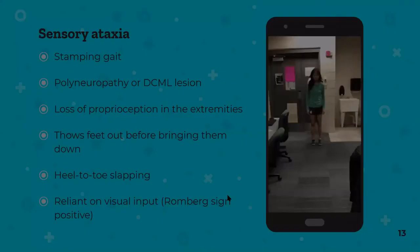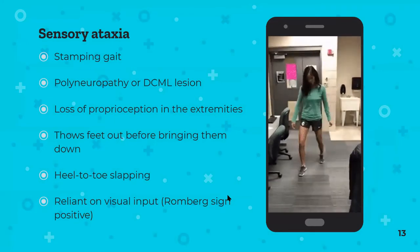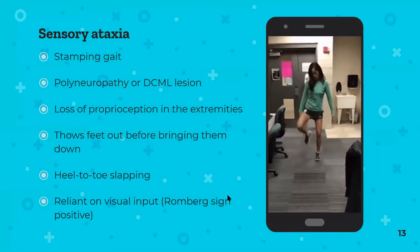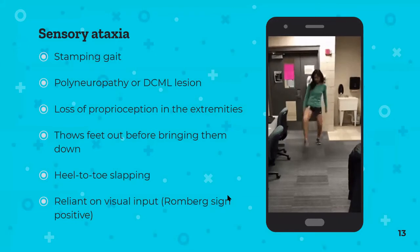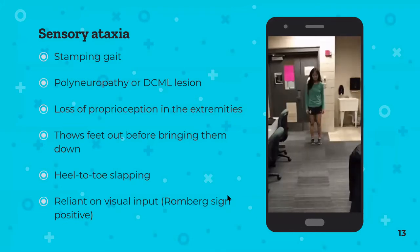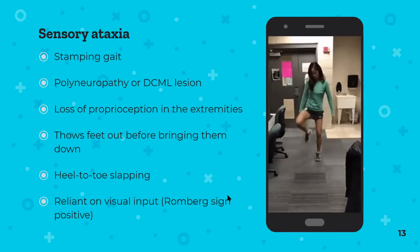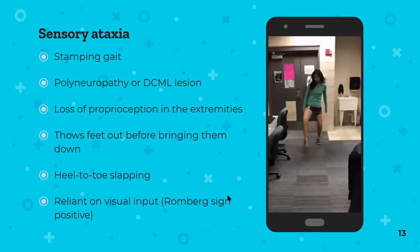Sensory ataxia results in a stamping gait — patients aren't throwing themselves about due to balance loss but have no idea where they're placing their feet, having lost proprioceptive input. They stamp about as if walking blindly. Caused by polyneuropathy such as diabetic polyneuropathy or dorsal column medial lemniscal lesions causing loss of proprioceptive feedback. Romberg's test is positive because they rely on visual input; without it they have no idea where their limbs are placed.